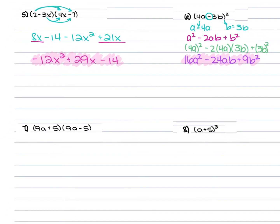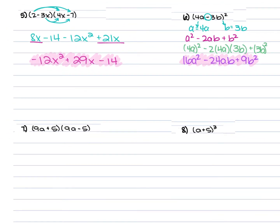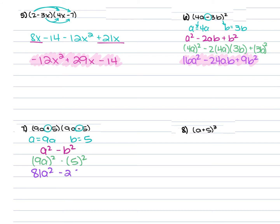For number 7, we have (9a + 5)(9a − 5). This is a difference of squares because a equals 9a and b equals 5, and they are separated by different signs. Using the formula a² minus b², we get (9a)² minus 5², which gives a final answer of 81a² − 25.